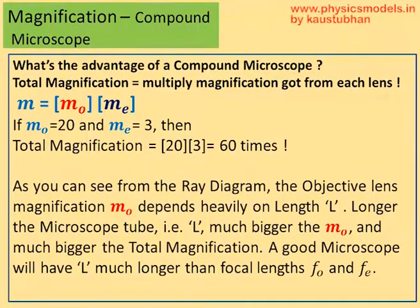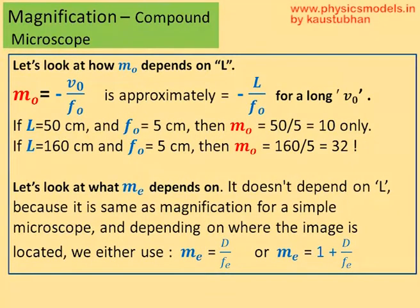Now, the M0 will depend heavily on the tube length, L. The longer the tube length, better the M0. This is how it happens. M0 is actually equal to minus of the V0 by F0, where V0 is the distance where the image is formed. And F0, as I told you, is the focal length of the objective lens.